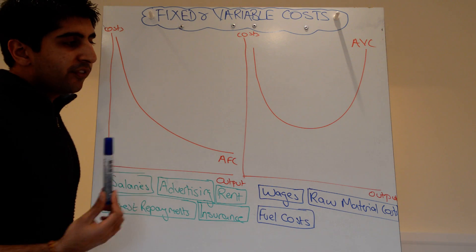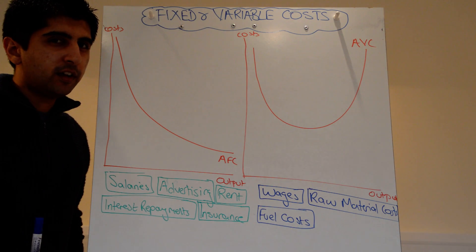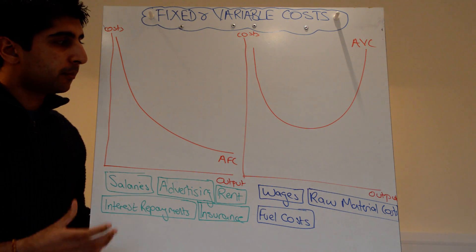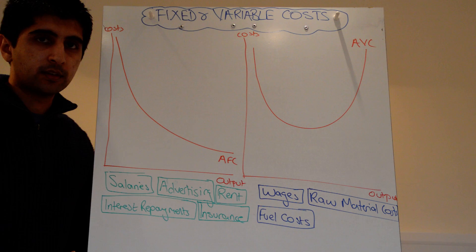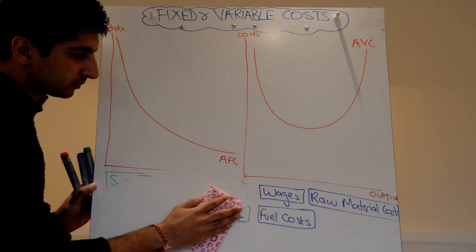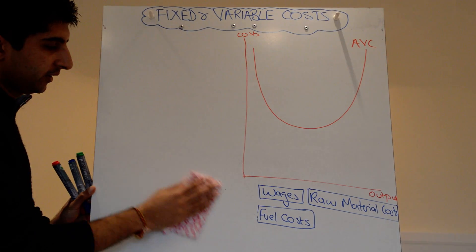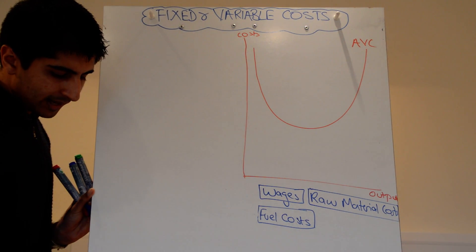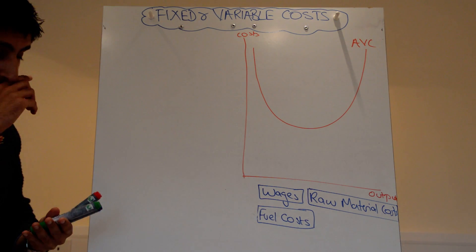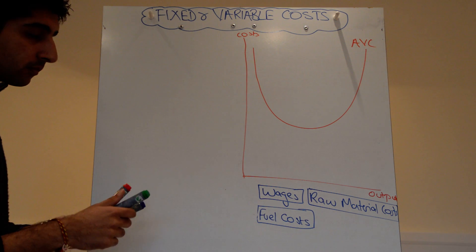Your average variable cost curve can actually be explained via diminishing returns. It's heavily influenced by the productivity of labour, and it comes back to similar reasons as we talked about for diminishing returns. The best way to explain the shape of this curve is by using a numerical example.